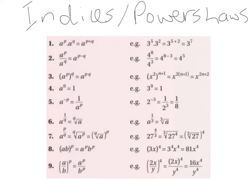Next, Law 7: A to the power of P over Q gives us the Q-th root of A to the power of P. The denominator comes out in front to become the root, and the numerator becomes the new power. So we get the Q-th root of A raised to the power of P. An example: 27 to the power of 4 over 3 — the denominator becomes the cube root, so it becomes the third root of 27 to the power of 4.